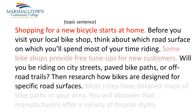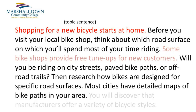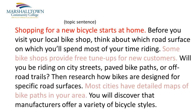How about the next sentence? Then research how bikes are designed for specific road surfaces. Again, this sentence is very much related to the topic sentence, so it also stays. How about: most cities have detailed maps of bike paths in your area. Now, this sentence is about biking, but it's not directly related to my topic sentence, so I'll highlight this as a possible deletion. How about: You will discover that manufacturers offer a variety of bicycle styles. That sentence is talking about bicycle manufacturers, so it's definitely related to my topic sentence about shopping for bikes, so it stays.